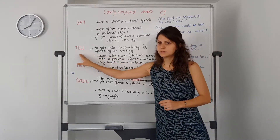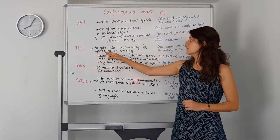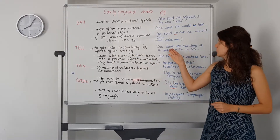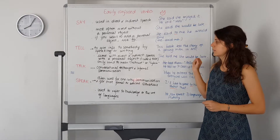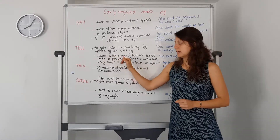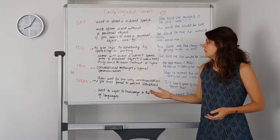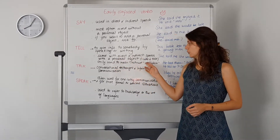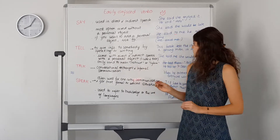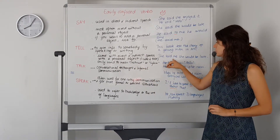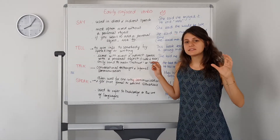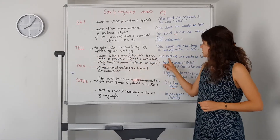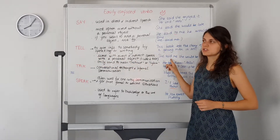The next one is tell. Tell is to give information to somebody by speaking or writing. For instance, this book tells the story of a young one in New York City. It is used both with direct and indirect speech as well, and often with a personal object — so who is told, you would include that person. For example: she told me she would be late. If the listener is important to mention, then rather use tell — she told me — rather than she said to me.